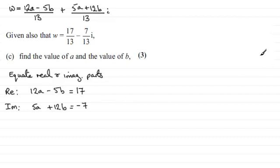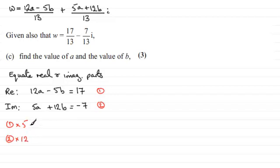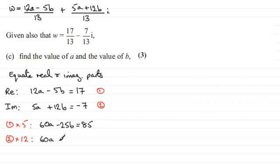And it's just a question now of solving these two simultaneous equations. The method I'm going to use is to bring the a's up to 60. So I'm going to times equation 1 by 5, and multiply equation 2 by 12. If we do that, then for equation 1 we get 60a minus 25b equals 85, and multiplying equation 2 by 12 gives us 60a plus 144b equals minus 84. I'll number those two equations 3 and 4.